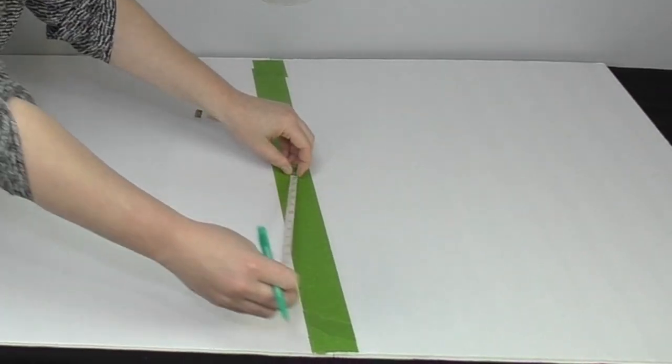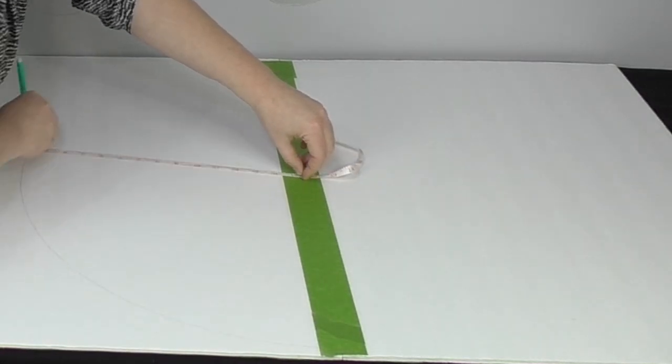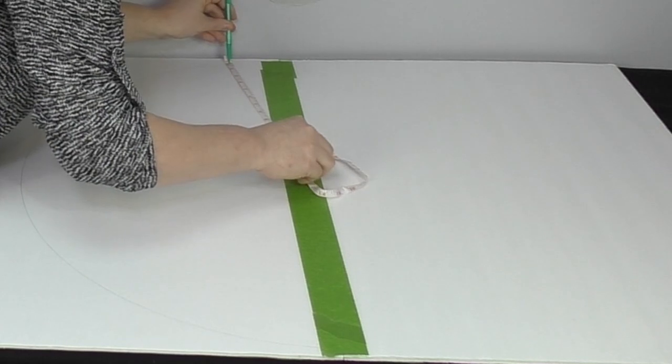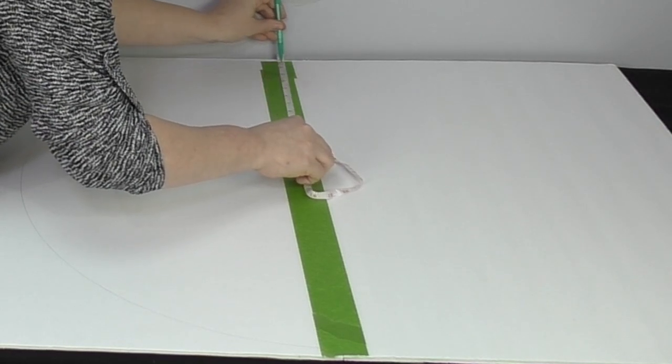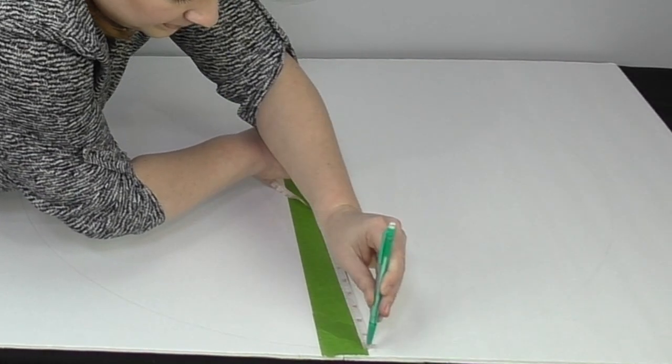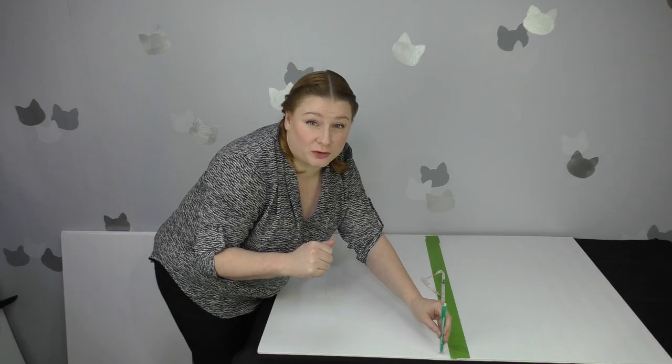I put my push pin into the middle, my pencil through the other side. I pull tight, and I start making my circle. Always keep your pencil straight up and down. That'll help keep your circle perfect.